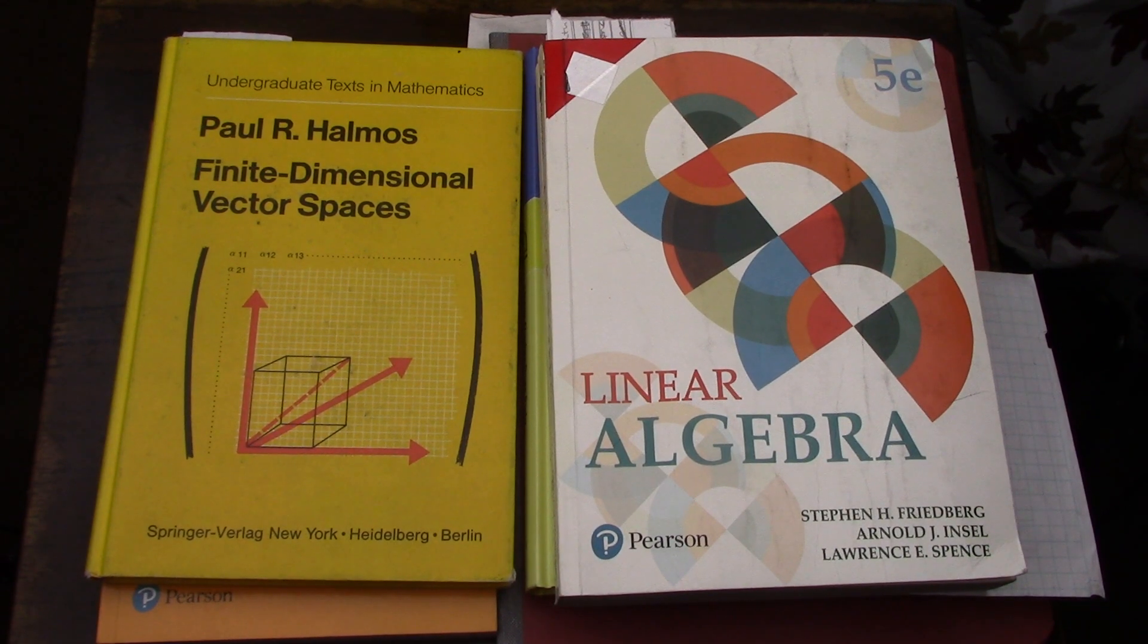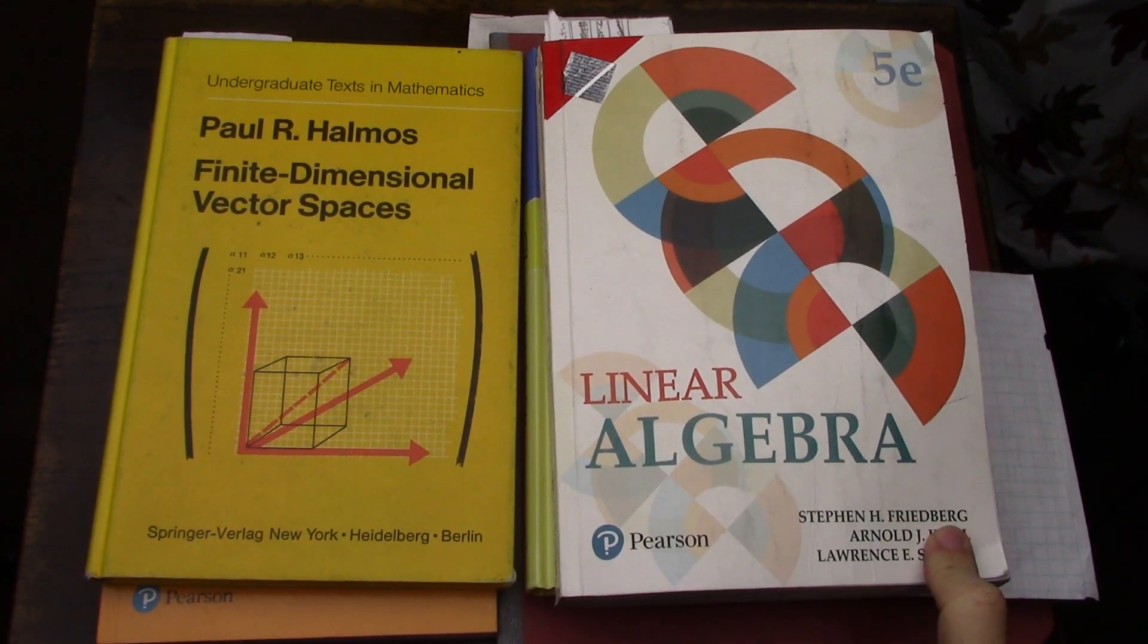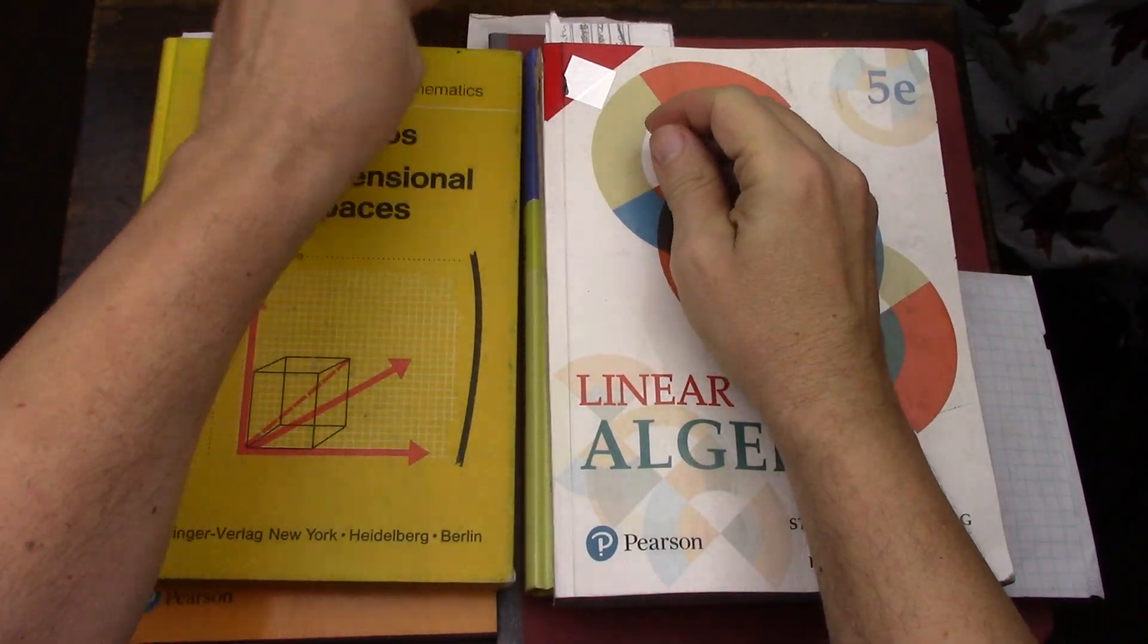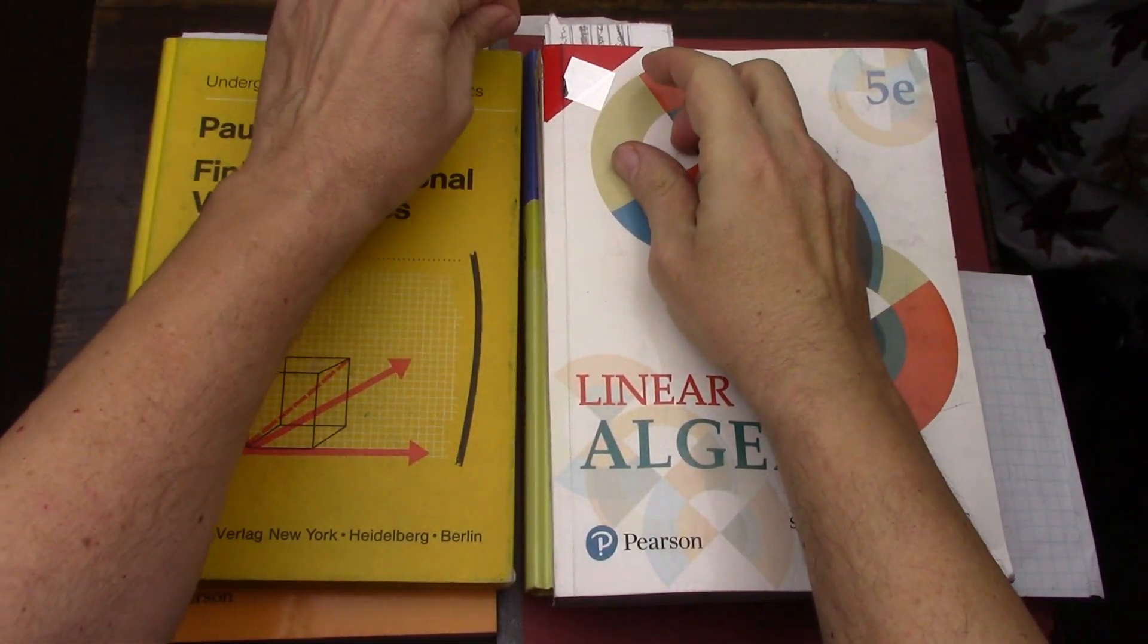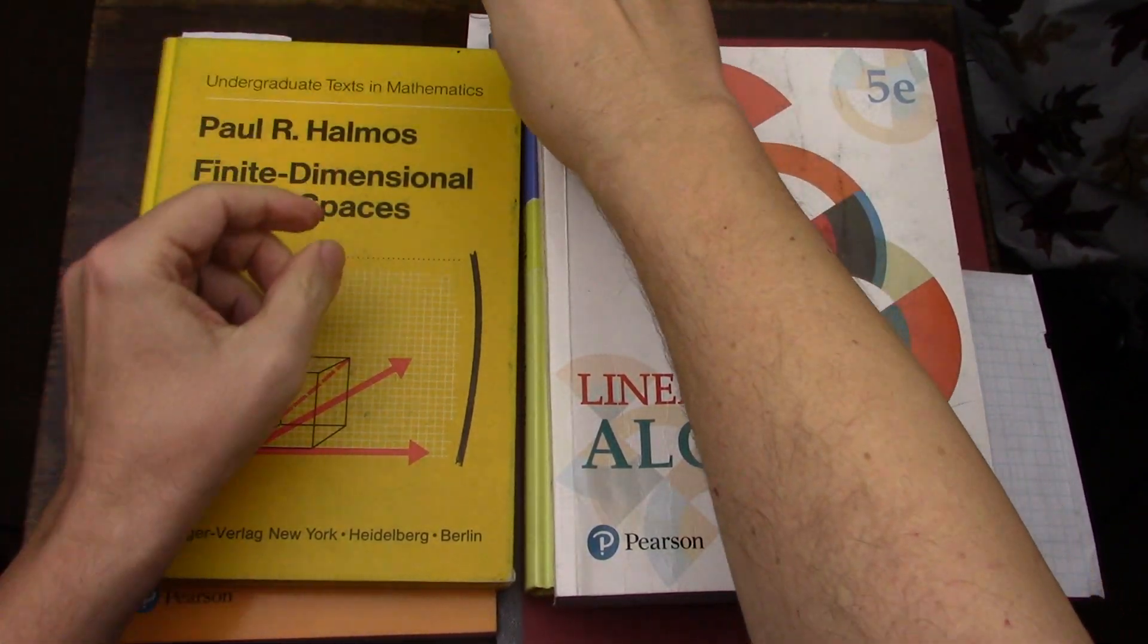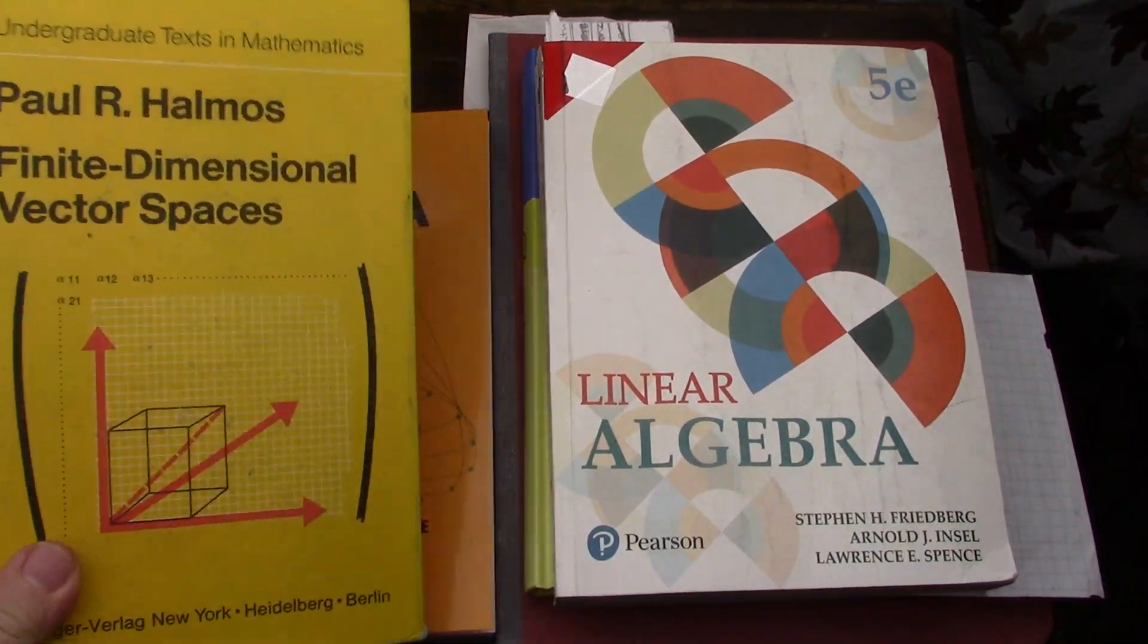There have been two problems so far in Friedberg and Spence having to do with cosets and quotient spaces. In this video I'm going to go through some reading that I did in Halmos, Hoffman and Kunze, and in Axler.